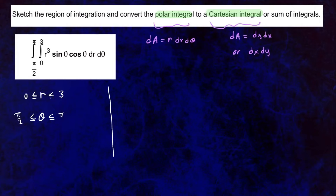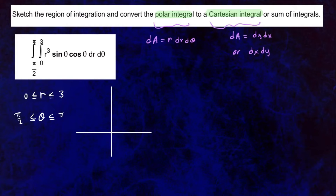If you sketch this region of integration, r goes from 0 to 3, so our radius is 3. Theta goes from π/2 to π — we know π/2 is here and π is here. So we're looking at this portion of the circle with r equal to 3. That quarter-circle arc in the second quadrant is our region of integration.